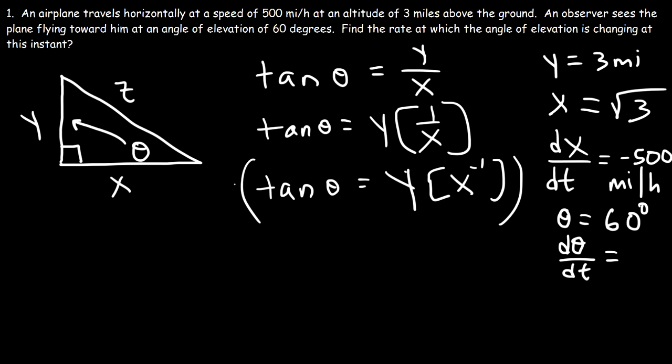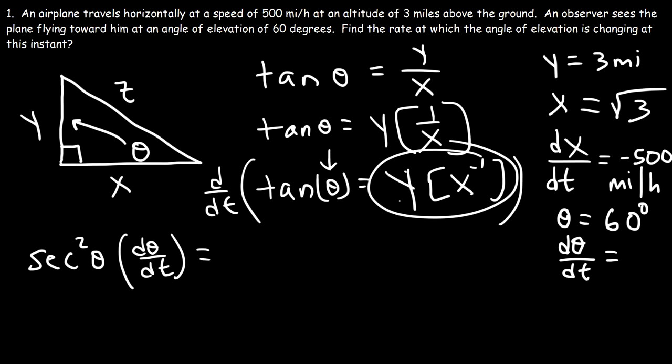1 over x is the same as x to the minus 1. Now in this form, I'm going to differentiate both sides with respect to time. The derivative of tangent is secant squared of theta. And the derivative of the angle theta is going to be dθ/dt. Now to differentiate this expression, we need to use the constant multiple rule. So the constant is y, we can rewrite that, times the derivative of x to the minus 1. So now we need to use the power rule. It's going to be negative 1x to the negative 2, and then times dx/dt.